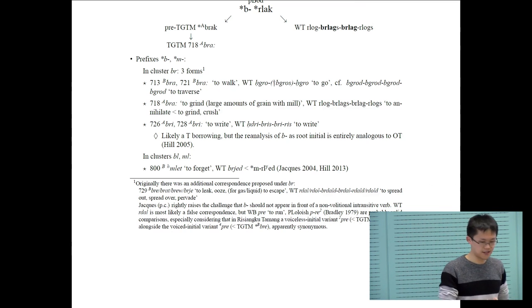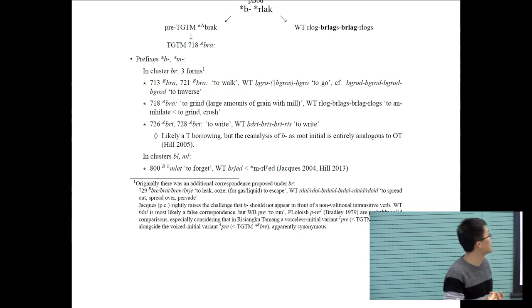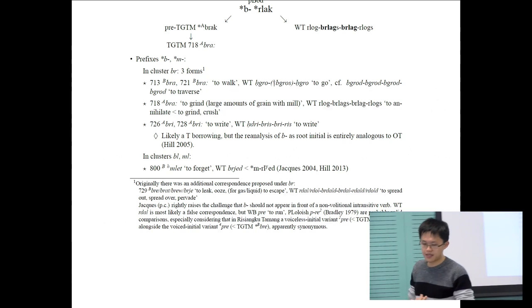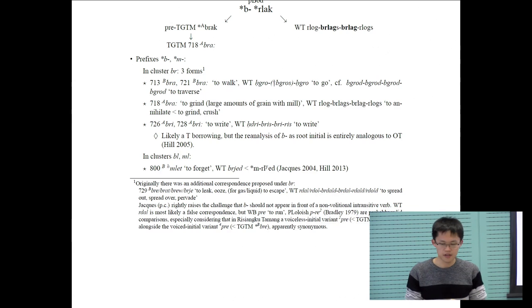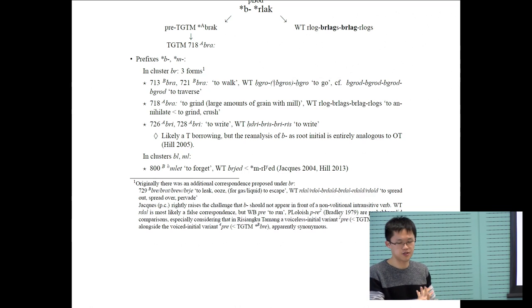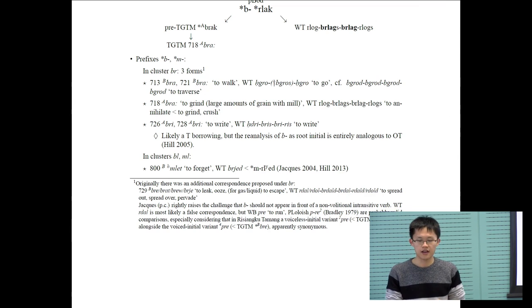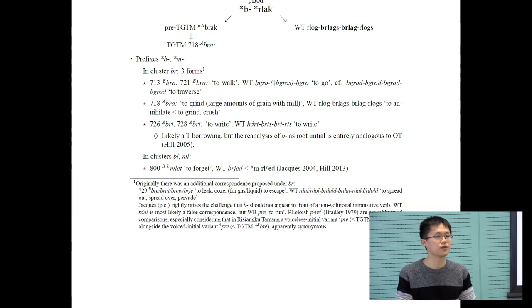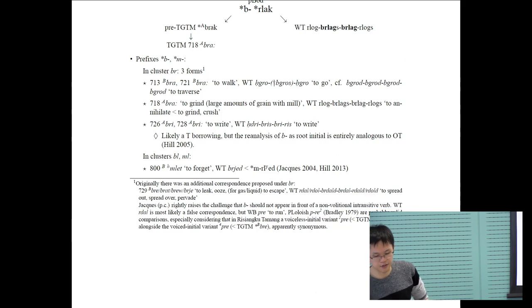There's also the word to write. This has been argued by Nathan, even in written Tibetan, to involve a case of reanalysis of the B prefix in a past stem as the root initial. This word, by virtue of its meaning to write, is likely a Tibetan borrowing into Tamangic. Nevertheless, there is an entirely analogous reanalysis that happened between old Tibetan and written Tibetan.